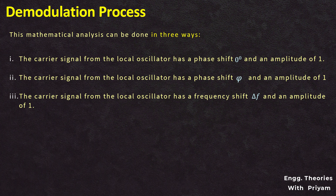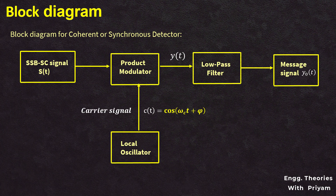In this lecture, we will discuss the second case of SSB-SC detection, where the carrier signal from the local oscillator has a phase shift of φ and an amplitude of 1. In order to understand this second case properly, you need to watch the previous lecture. The block diagram remains pretty much the same as the first case, except instead of a carrier signal with no phase shift, we have a carrier signal with a phase shift of angle φ. Let's see the mathematical analysis for the SSB-SC modulated signal with a carrier signal having a phase shift of φ.